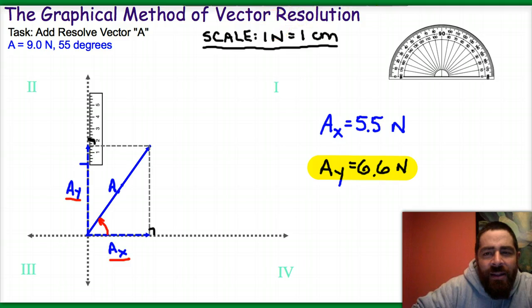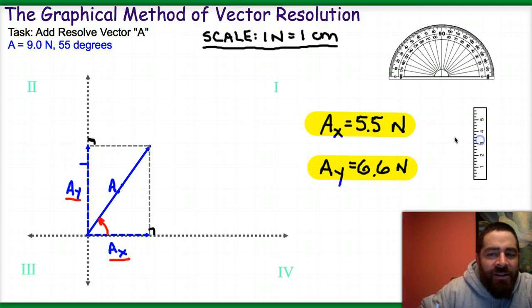Okay, so at the end of the day, these are the two pieces of information that I need to extract from this whole process. I need to know the x-component, which is 5.5 newtons, and the y-component, which is 6.6 newtons, and that's how to resolve a vector using the graphical method.